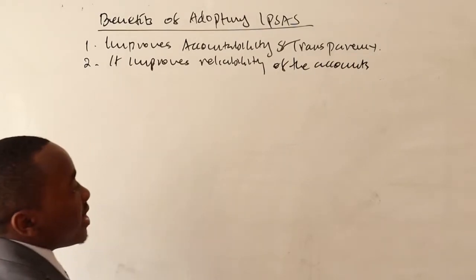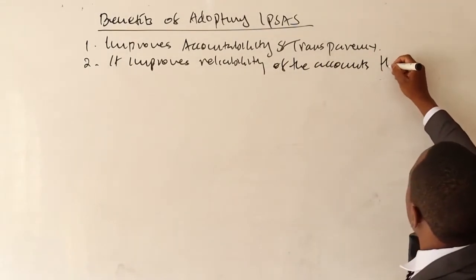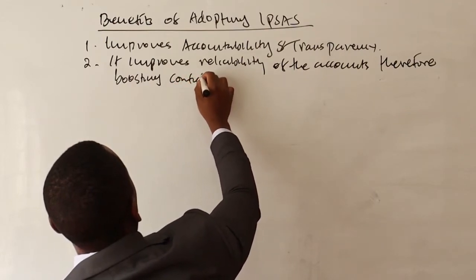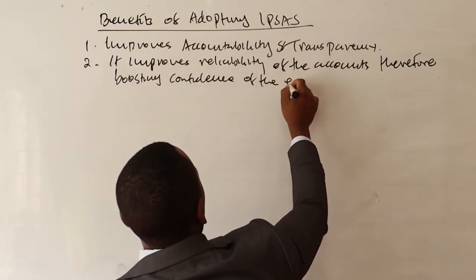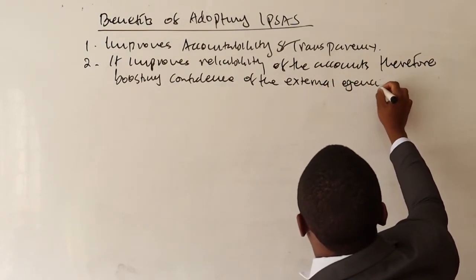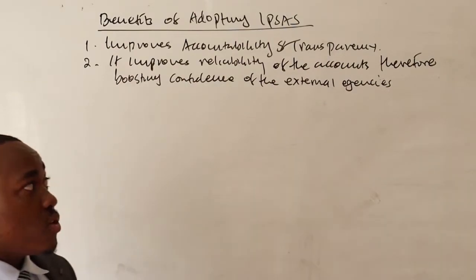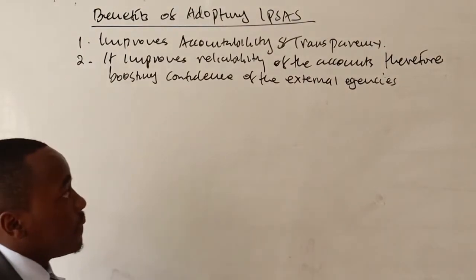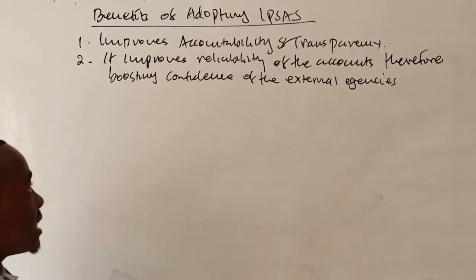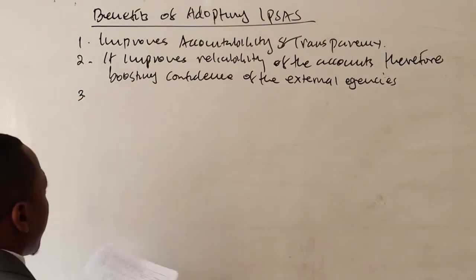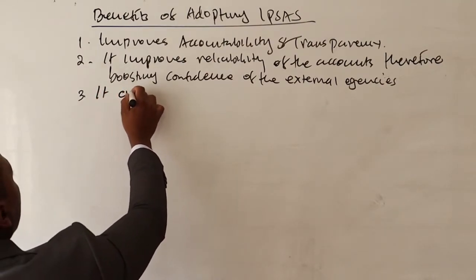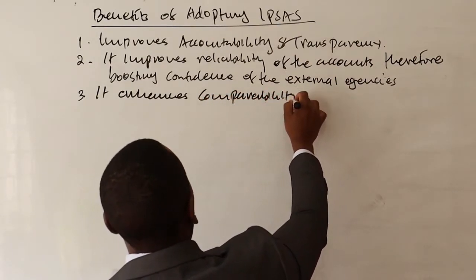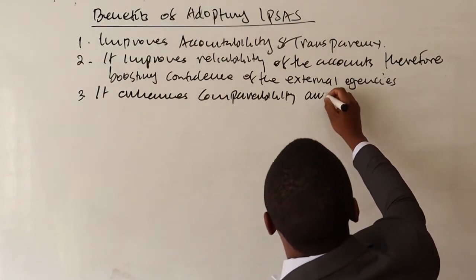Improved reliability of accounts boosts the confidence of external agencies such as the IMF and the World Bank, which rely on government accounts. Number three, adopting IPSAS enhances comparability among government entities.